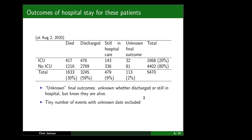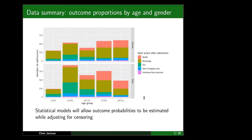We're interested in the statistics of these outcomes by age and gender. We've defined five different age groups, male and female. You can see the gradient in severity with age — the risk of death increases with age, and severe outcomes are more common for men than women. ICU admissions are more common among people under 75 compared to over 75, which is partly a matter of hospital policy.